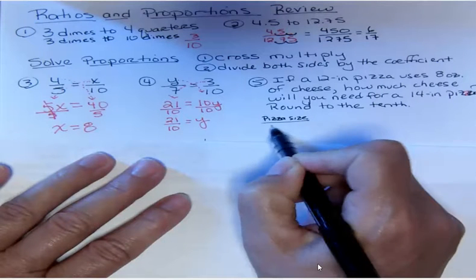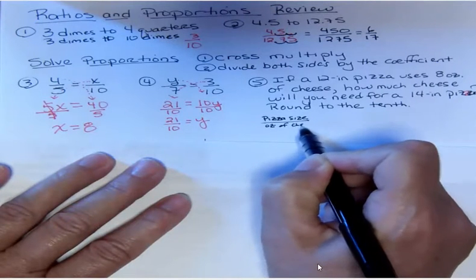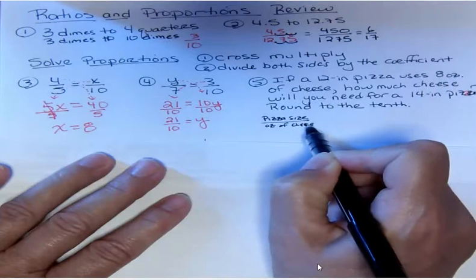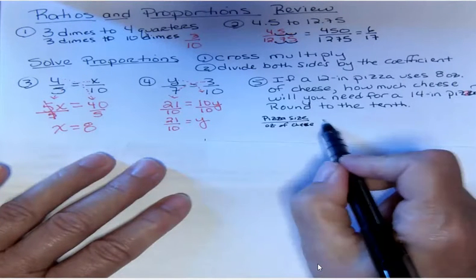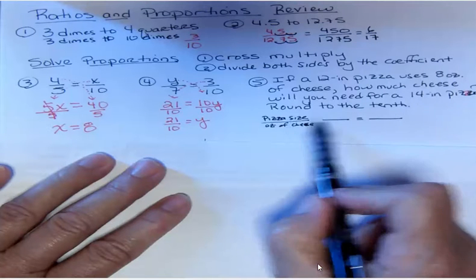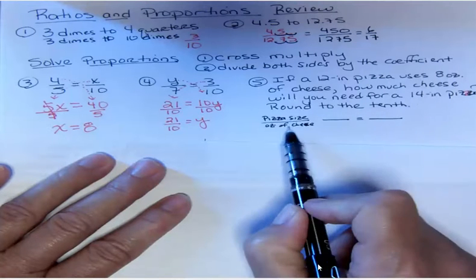You don't have to be that thorough but I am. You could just write pizza to cheese or something like that, or size to cheese. Now when I set my proportion up, I want to make sure that always on the top is the size of the pizza and always on the bottom is the ounces of cheese that we need.